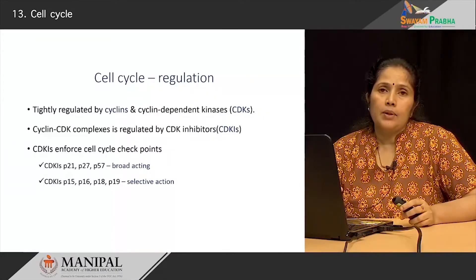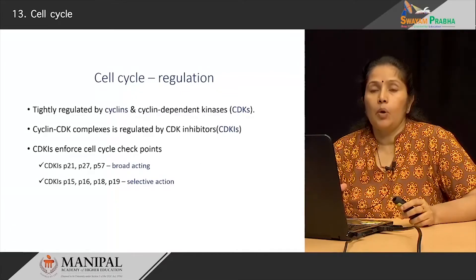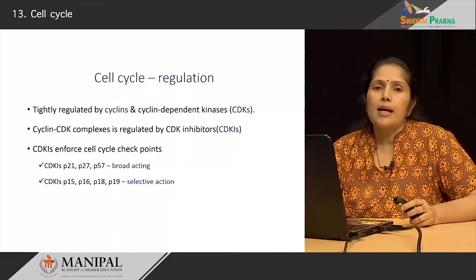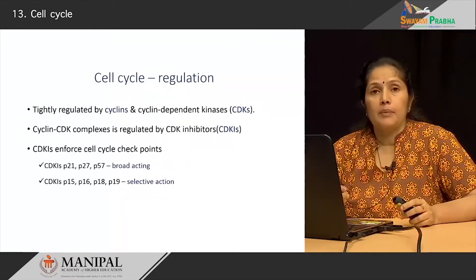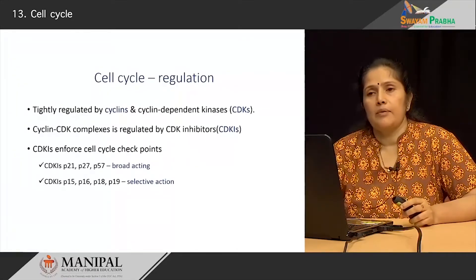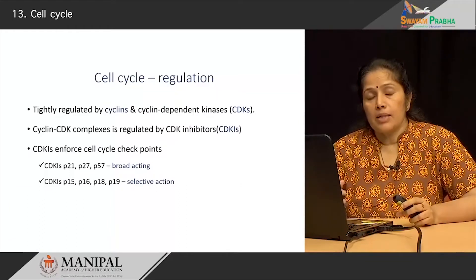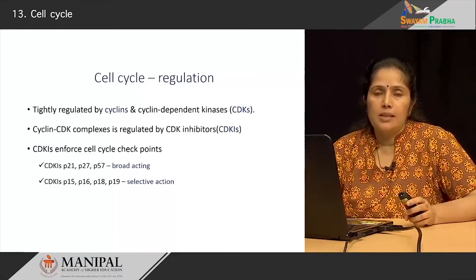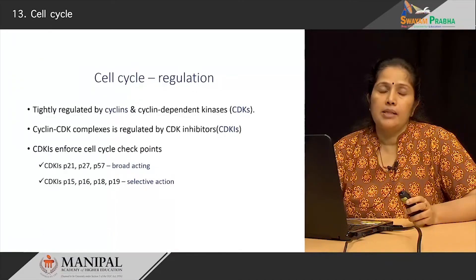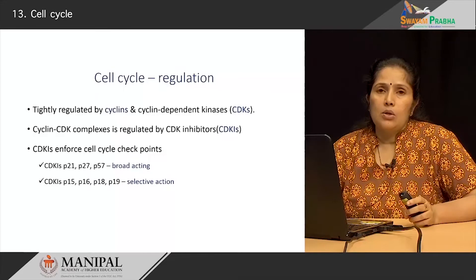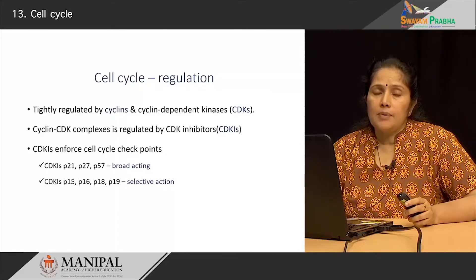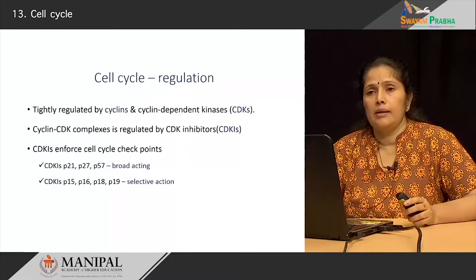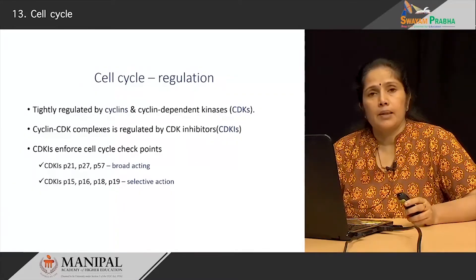There are two types of CDKIs. The broad-acting CDKIs are P21, P27, and P57, while the others which have a more selective mode of action are P15, P16, P18, and P19. These two types of CDKIs play their role in the checkpoints of the cell cycle.